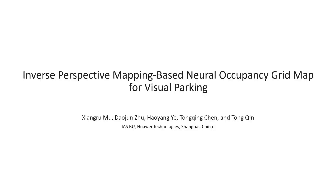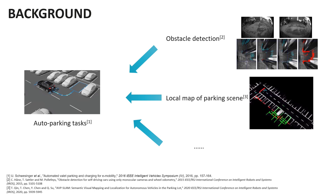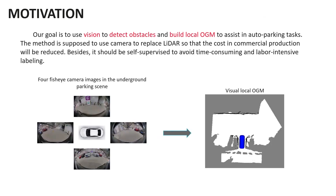In this paper, we proposed a novel occupancy mapping method named Inverse Perspective Mapping Based Neural Occupancy Grid Map for Visual Parking. Auto parking has become a hotspot in the development of autonomous vehicles, which can let humans get rid of complicated parking operations and improve parking success rates. The key to realizing auto parking tasks is to detect environmental obstacles and establish a local map of surroundings. Our goal is to use vision to detect obstacles and build a local OGM to assist in auto parking tasks.